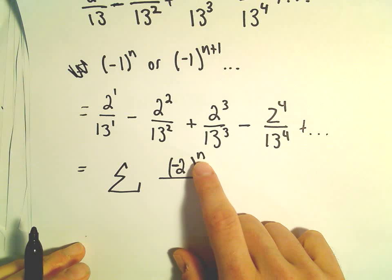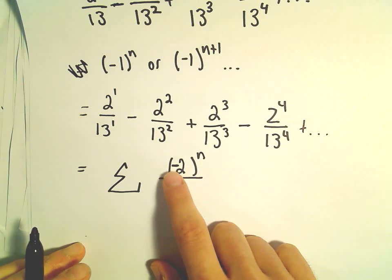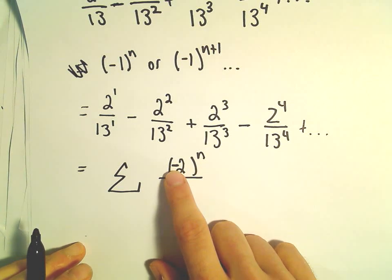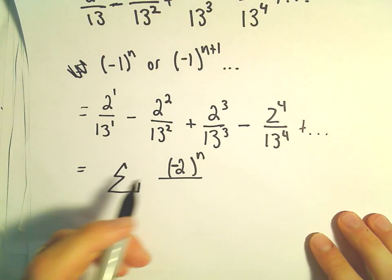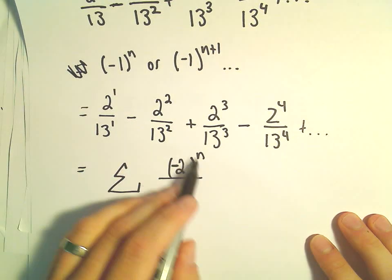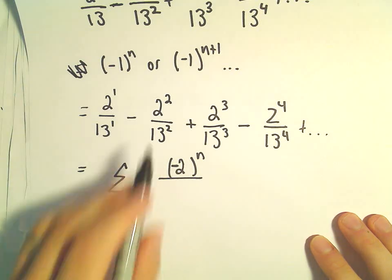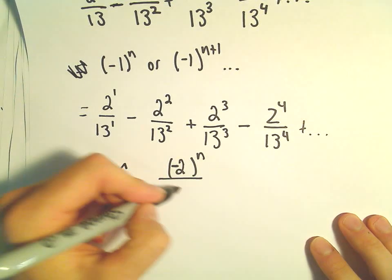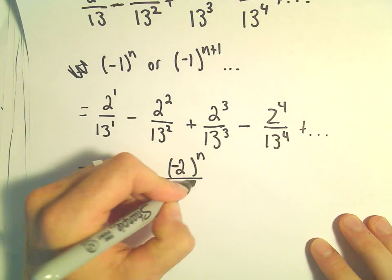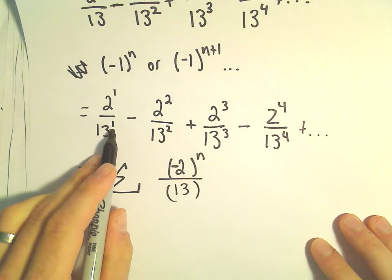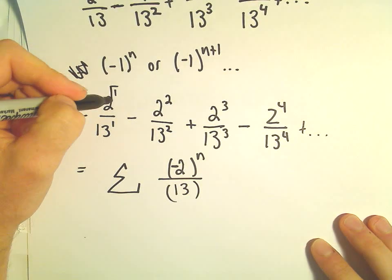So perfectly valid to, instead of having this (-1) term, just include it with the power of 2. And in the bottom, we also have 13. The exponents are always the same. So the exponent to me is kind of what's changing.